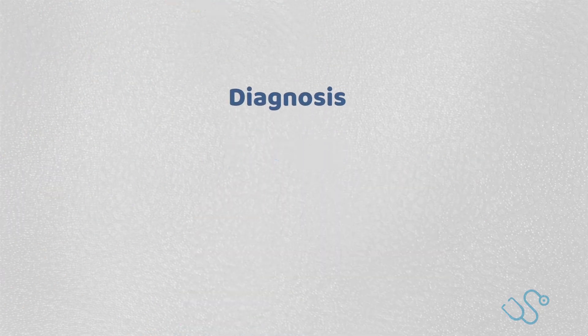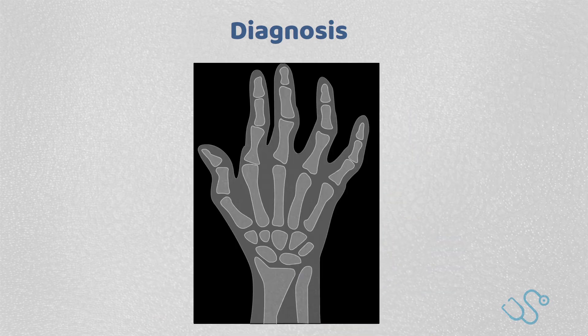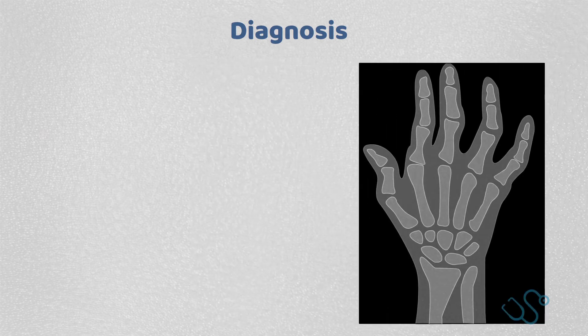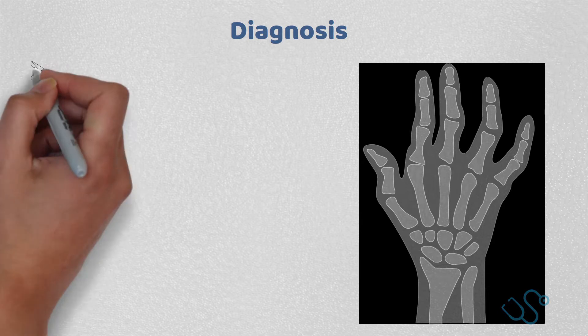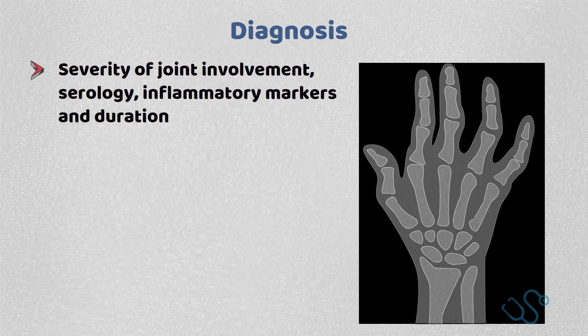Diagnosis can often be done clinically, with support from immunology and rheumatological criteria. The American College of Rheumatology set about specific criteria that requires a certain score to aid diagnosis. It involves the severity of joint involvement, serology, inflammatory markers, and the duration of symptoms.